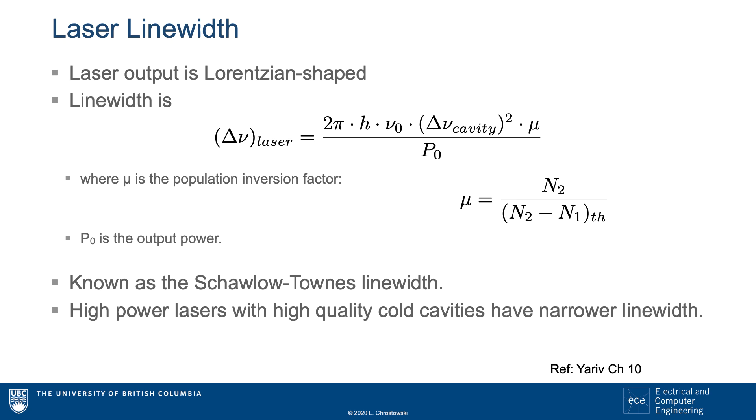Theoretical investigations into the linewidth of the laser were done when lasers were first proposed. The Schawlow-Townes linewidth tells us that the linewidth is Lorentzian shaped, and the equation has several important factors. First, the linewidth is proportional to the square of the linewidth of the optical cavity, or the resonator.